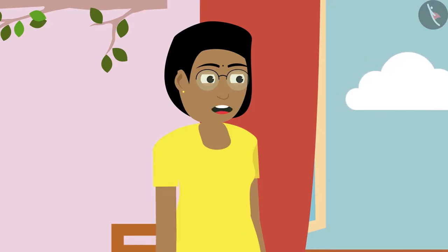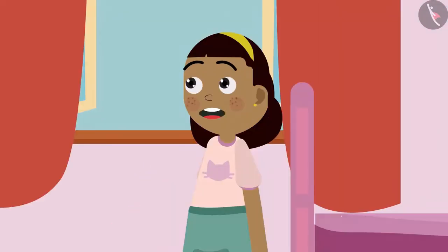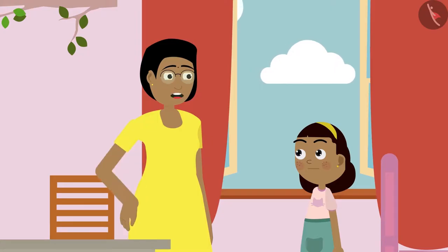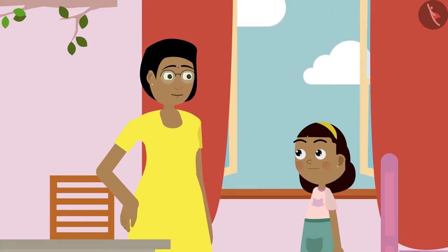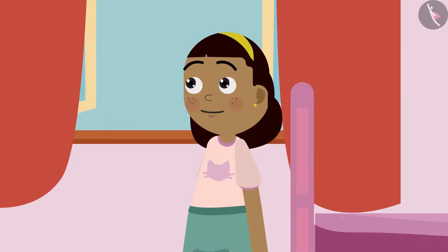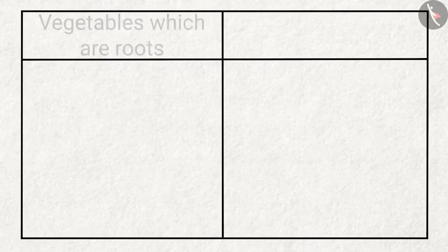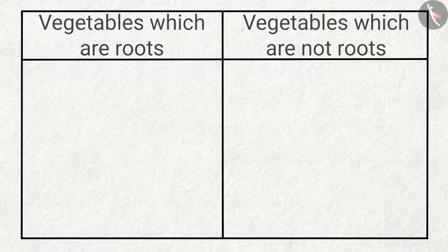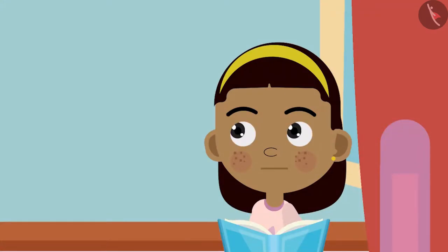Mother asks: And do you know about the vegetables that are actually roots? Zia says: Vegetables aren't roots — which vegetables, mummy? Mother says: I will tell you the names of some vegetables and you have to guess whether they are roots or not. Zia agrees and says: But first, let me make a table in my notebook. Zia makes a table with two columns: vegetables which are roots, and vegetables which are not roots. As Zia starts making her table, the telephone rings.